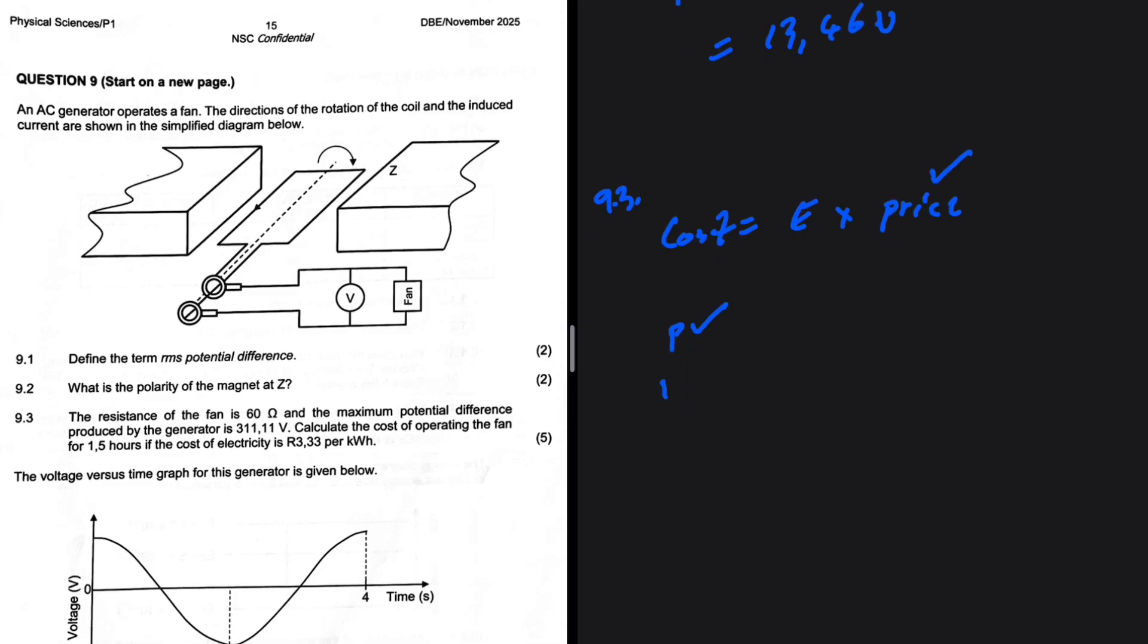How do we calculate the power? We have the resistance, which is 60 ohms. We are given the maximum potential difference produced, which is 311.11 volts. So we can find V_rms to be equal to V_max divided by square root of two.